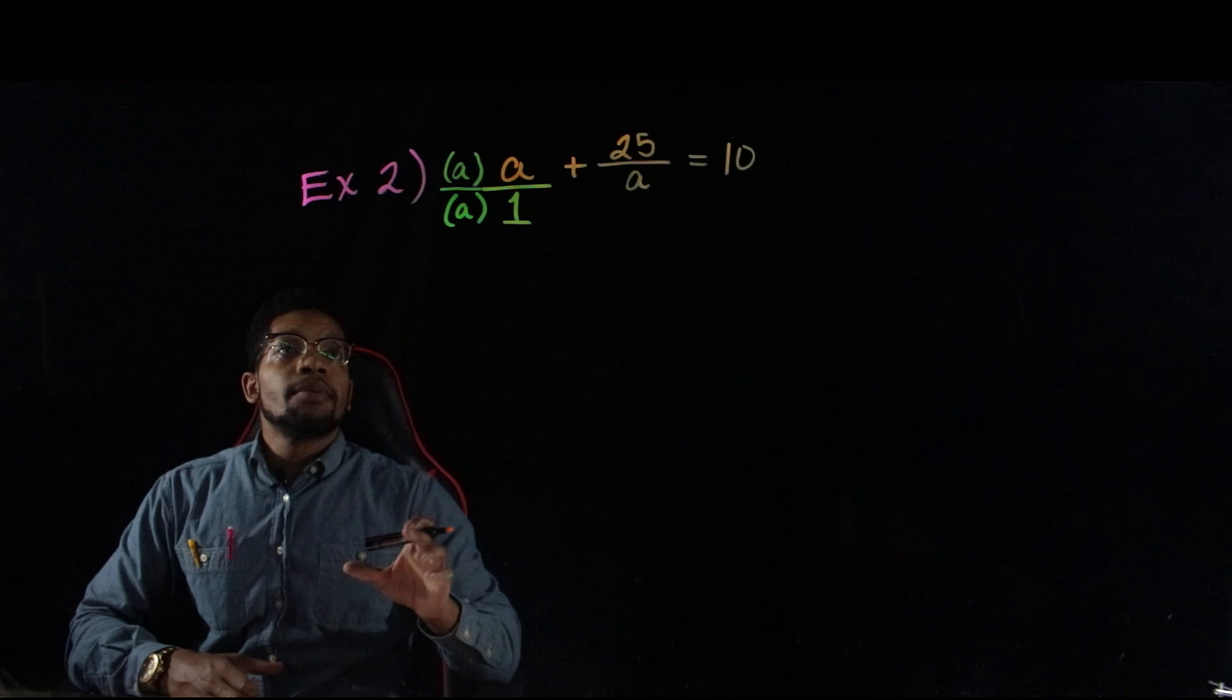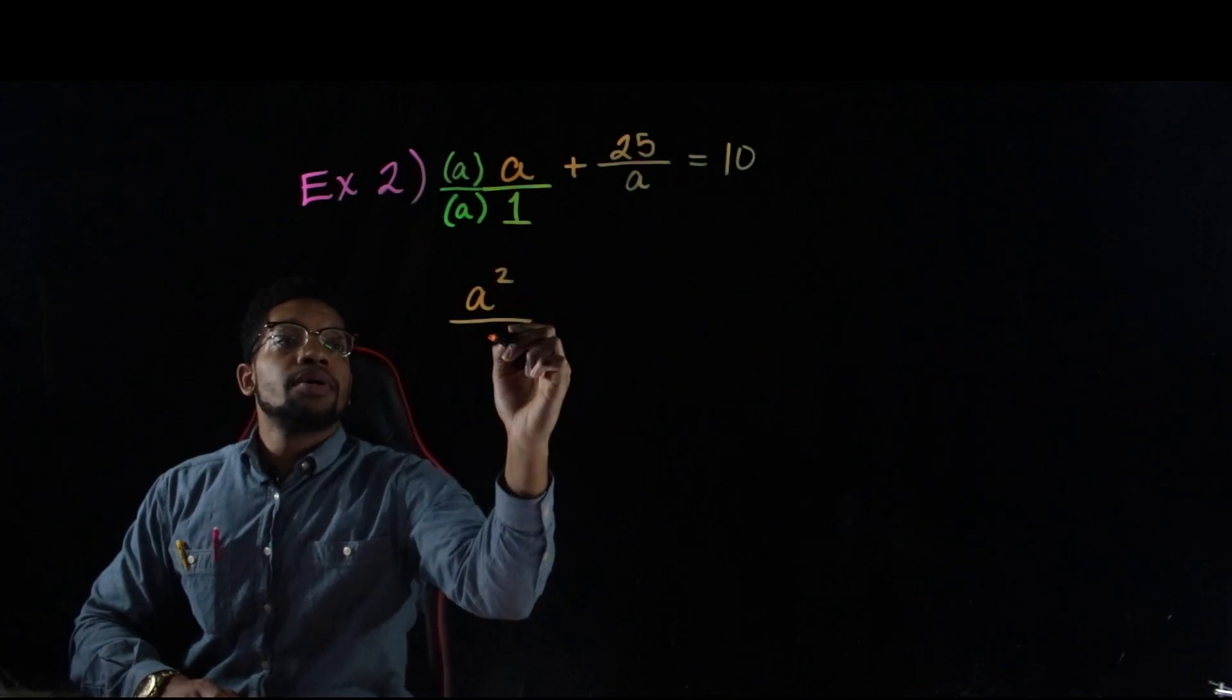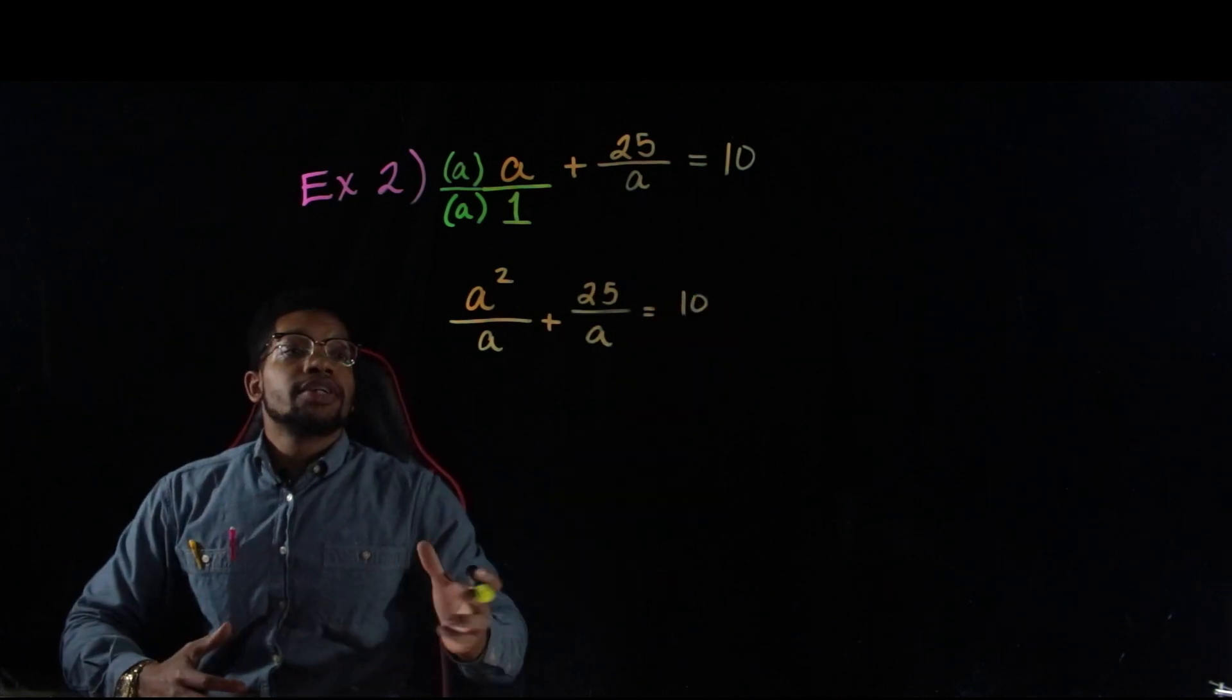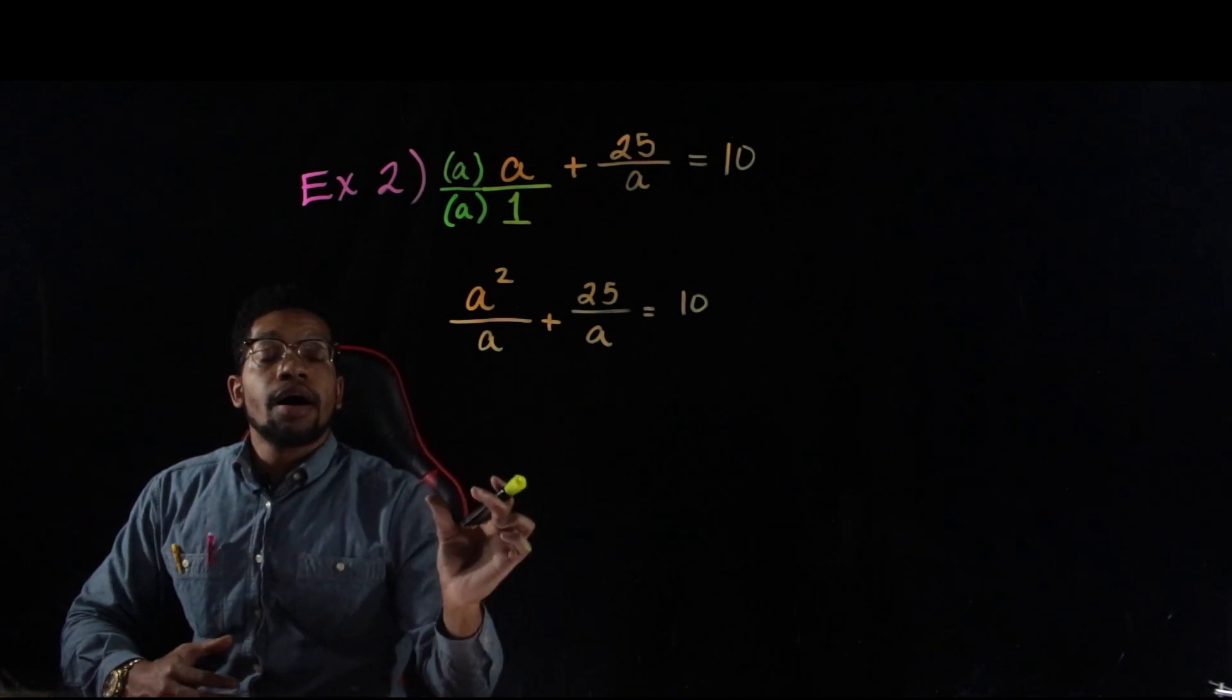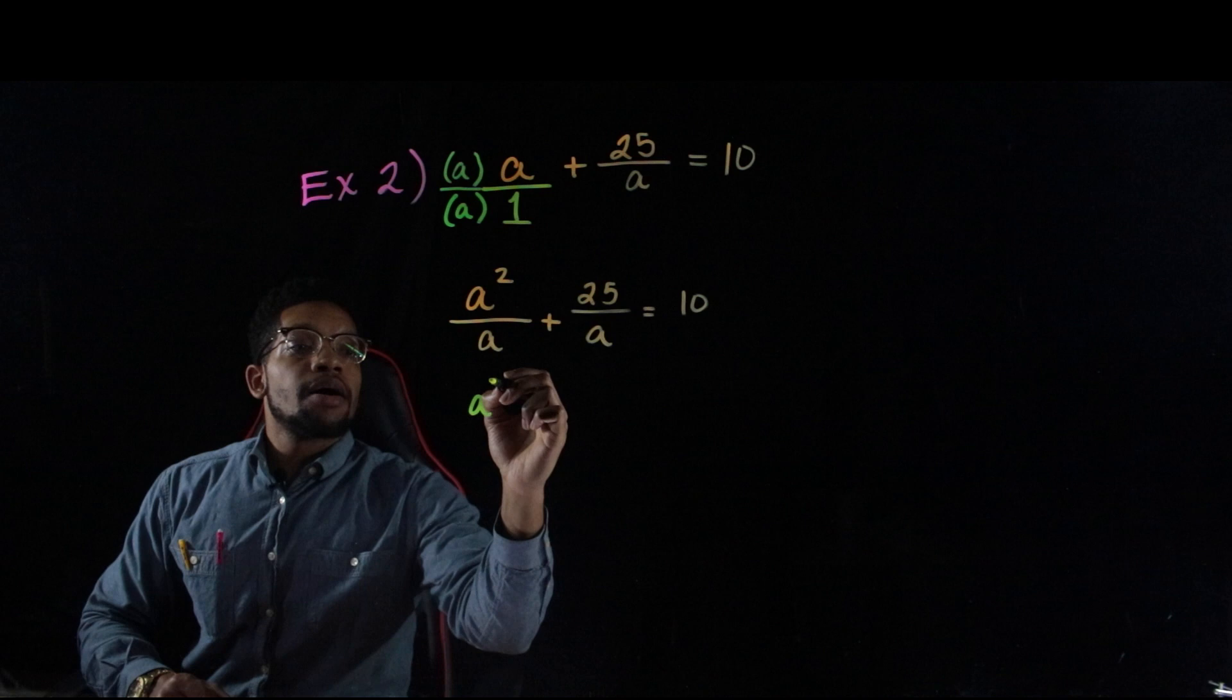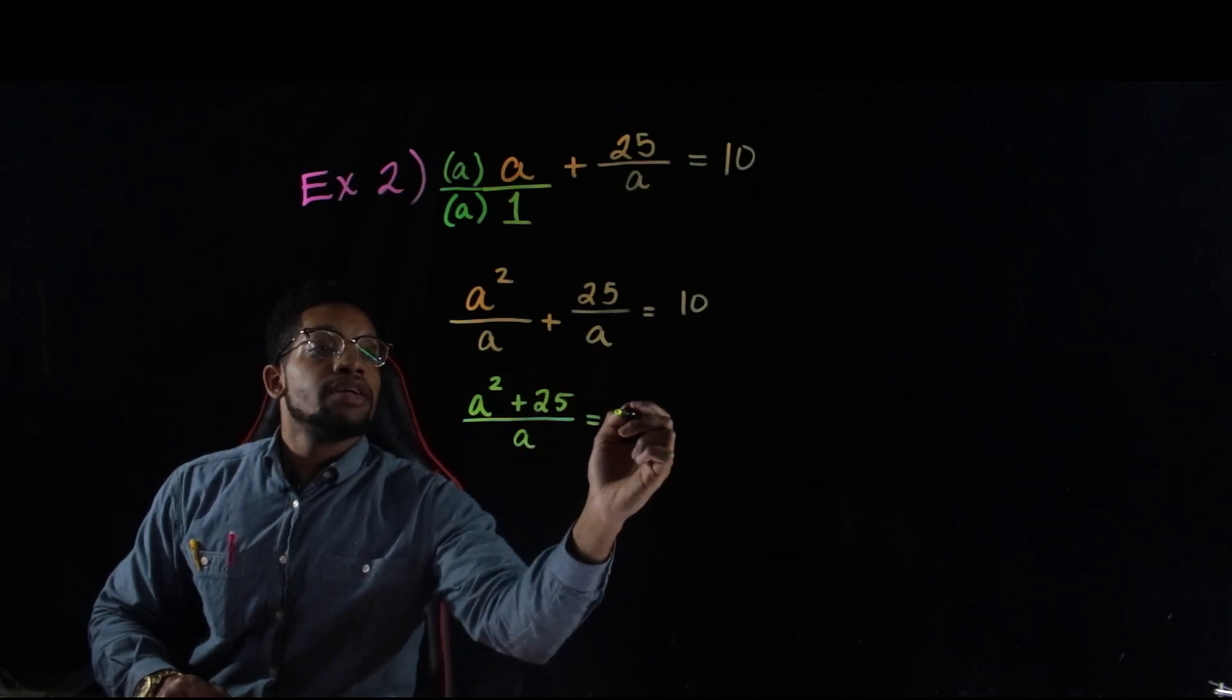So, first, what I'm going to do is, I'm just going to multiply everything out in my first two fractions. So, on top, I have a times a, and that's going to give me a squared over a times one, which is a, and then I'm going to add my 25 over a, and then that's still going to be equal to 10. Now, since I have common denominators, I can add across the top, and then whatever is in my denominator just stays as one denominator. So, I'm basically taking these two fractions and kind of consolidating them into one fraction. So, adding across the top, I'll have a squared plus 25, and then on bottom, I'll just have my common denominator of a, and then that equals 10.